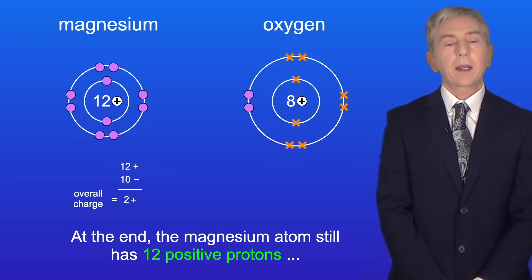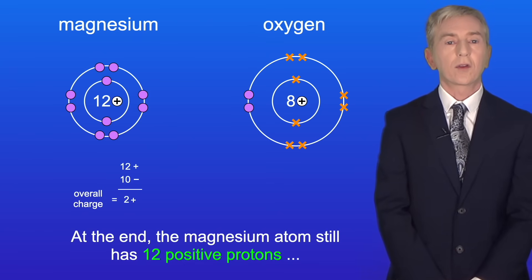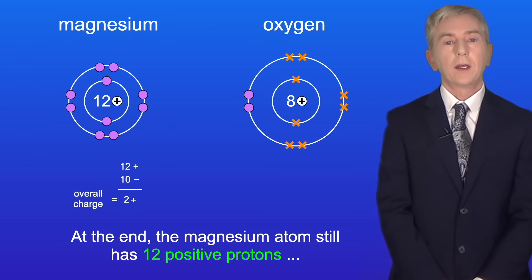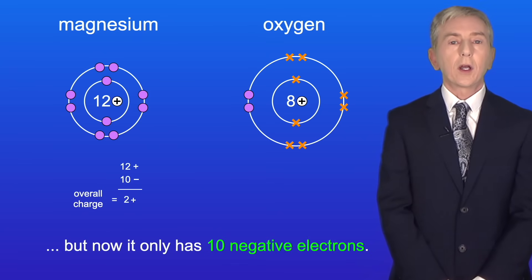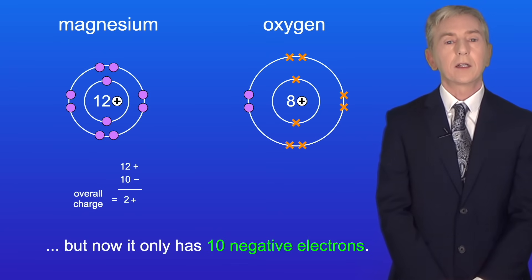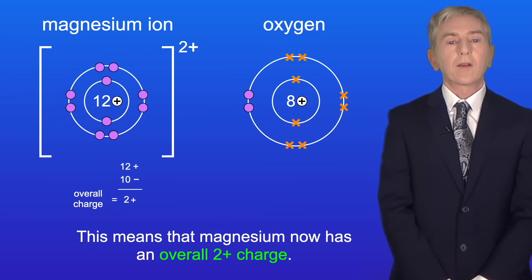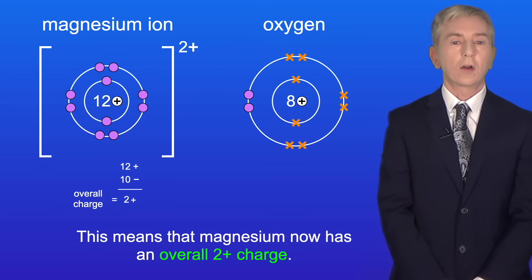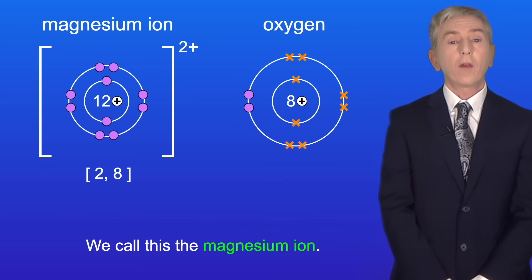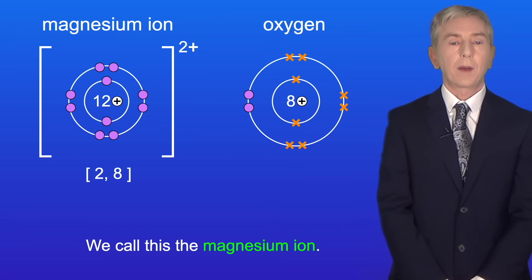At the end, the magnesium atom still has 12 positive protons but now it only has 10 negative electrons. This means that magnesium now has an overall 2 positive charge and we call this the magnesium ion.